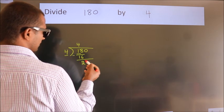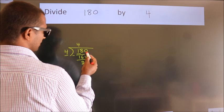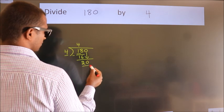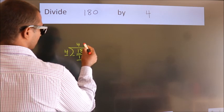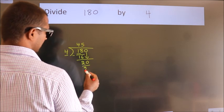After this, bring down the beside number. So, 0 down, making 20. When do we get 20 in the 4 table? 4 fives equals 20.